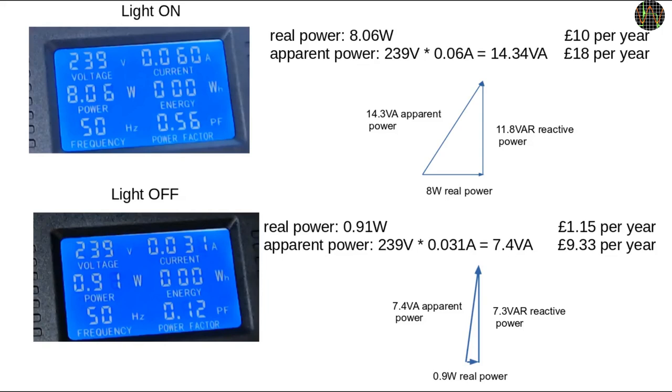Obviously if the power factor is 1, the angle is 0, the vectors of apparent power and real power are equal and on top of each other and the reactive power is 0. Obviously this is not the case here, whether the light is on or off.